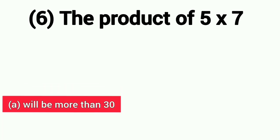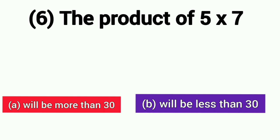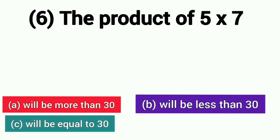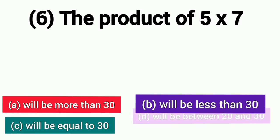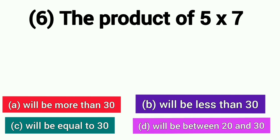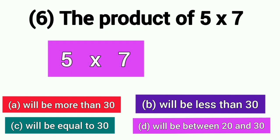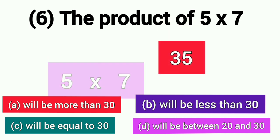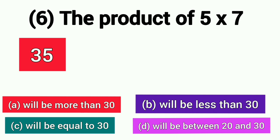The product of 5 multiplied by 7 will be more than 30, will be less than 30, will be equal to 30, or will be between 20 and 30. Let's find out the product of 5 and 7. The product of 5 multiplied by 7 is 35